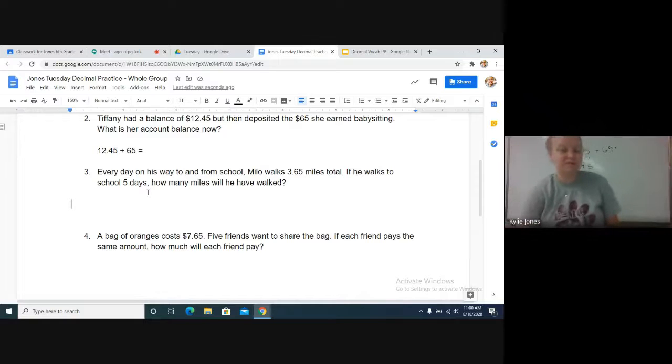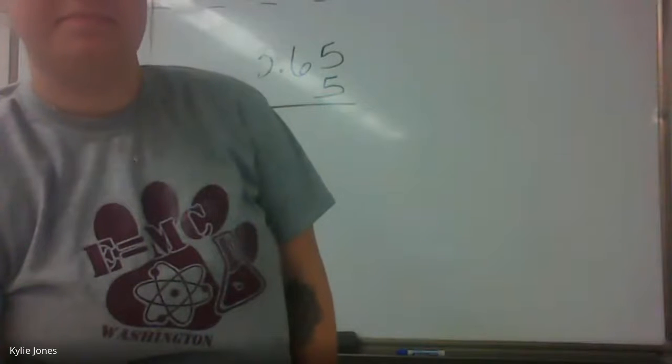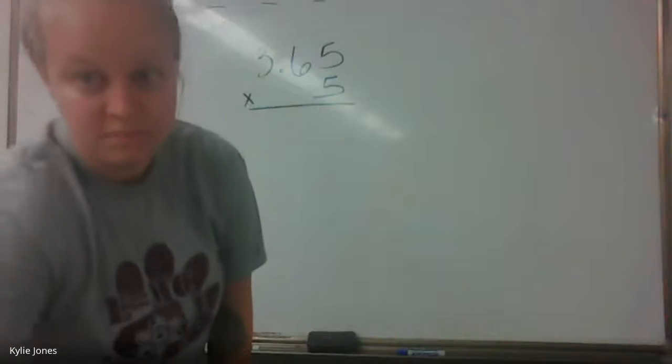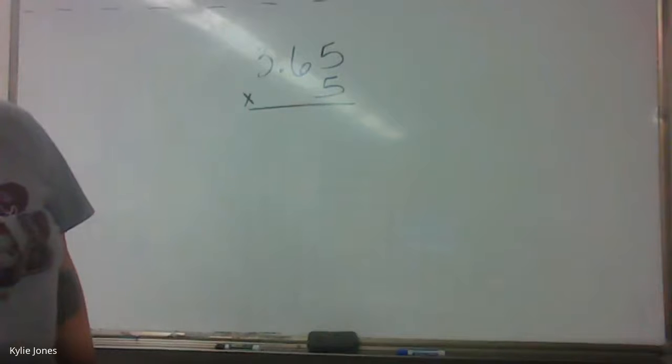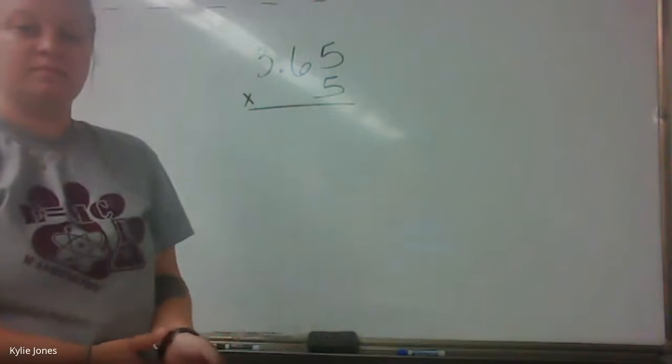So that's what we're going to do. You could, if you wanted to, add them all together. It just might take a little bit longer, but if you're more comfortable with adding, that's totally good. We're going to do 3.65 times the five days that he walks. So go ahead and take a minute to work that one out. And keep the answer to yourself. Don't write it in the chat just yet. We'll go over it. I'm going to stop presenting at this time.